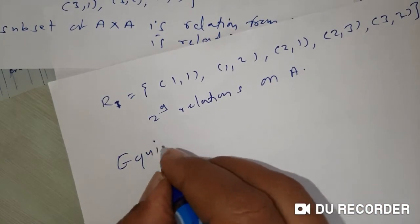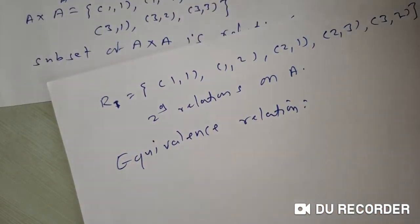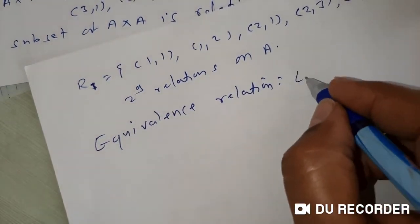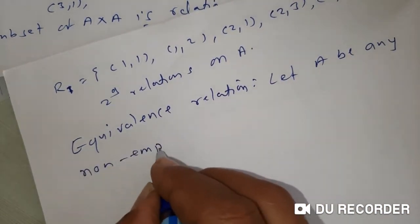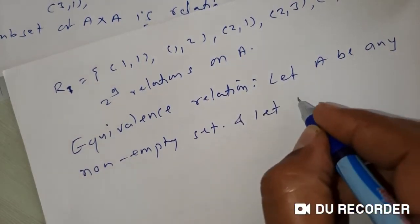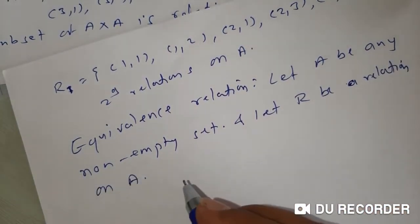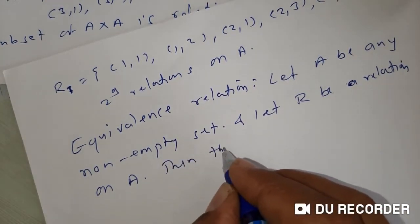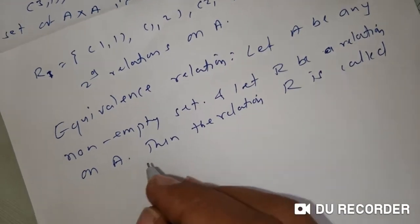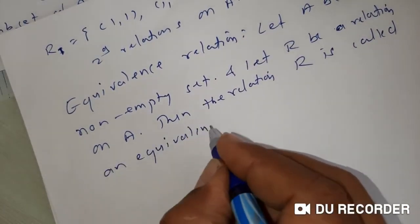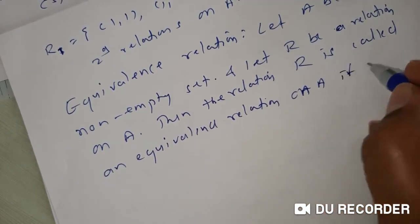Next is the definition of an equivalence relation. Let A be a non-empty set and let R be a relation on A — that is, R is a subset of A cross A. Then R is called an equivalence relation on A if the following three properties are satisfied.